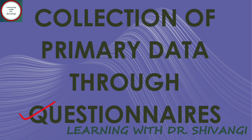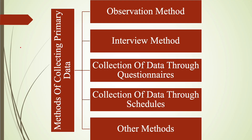What is the classification of the primary data collection method under which questionnaire comes? There are the following types: first is observation method, already discussed in the previous video; second is interview method, also discussed previously; third is collection of data through questionnaires, discussed in this current video; next is collection of data through schedules, to be discussed in upcoming videos; and the last is other methods, also to be covered in upcoming videos.